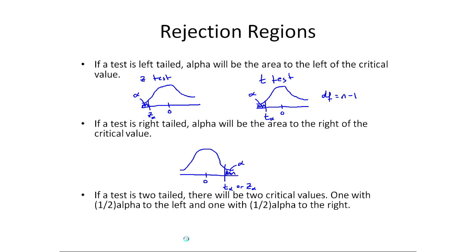Finally, if we have a two-tailed test, we're going to draw our rejection region with half of alpha over here. We're going to actually have two cutoffs and half of alpha over here. Our cutoffs are going to be either a negative t alpha and a positive t alpha, or a negative z alpha and a positive z alpha.